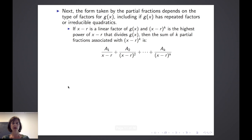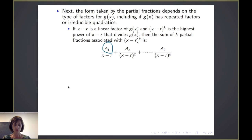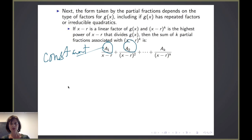Suppose (x − r) is a linear factor of g(x), and (x − r) to some power k is the highest power of (x − r) that divides g(x). The sum of k partial fractions associated with (x − r)^k is: a constant A₁ divided by (x − r), plus another constant A₂ divided by (x − r)², plus A₃ divided by (x − r)³, and you continue up through k fractions.